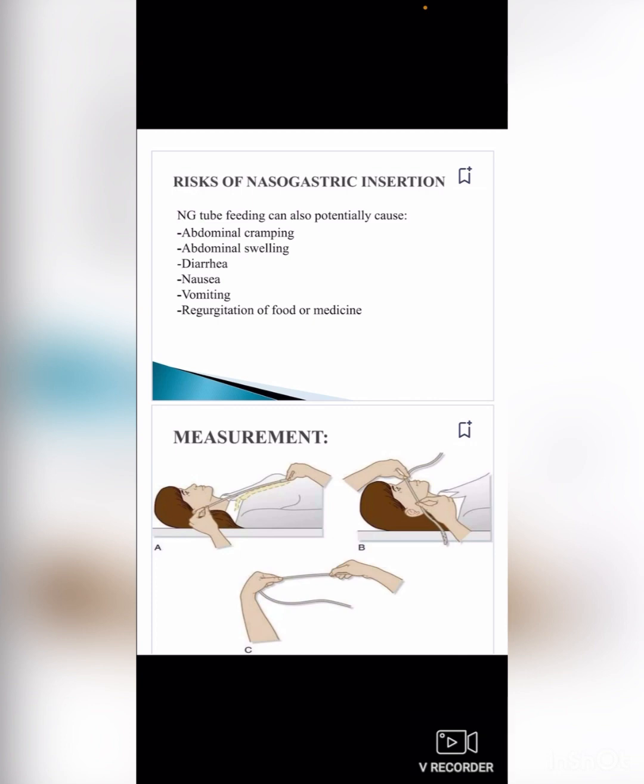Risks for nasogastric insertion: NG tube feeding can potentially cause abdominal cramping, abdominal swelling, diarrhea, nausea, vomiting, and regurgitation of food or medicine.